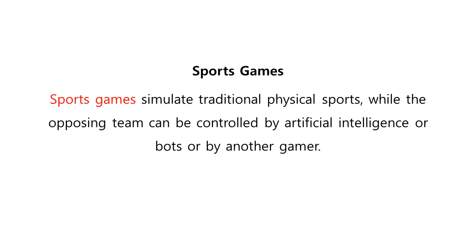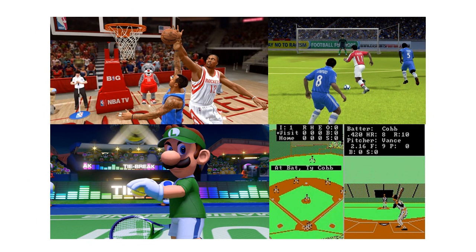Sports games simulate traditional physical sports while the opposing team can be controlled by artificial intelligence or bots, or by another gamer. These are examples of sports games that emulate the playing of traditional physical sports.